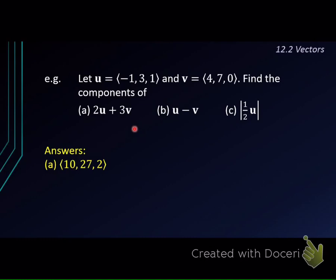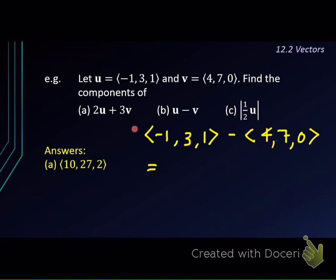For u minus v: we have (−1, 3, 1) minus (4, 7, 0). We subtract the respective components: negative 1 minus 4 gives negative 5; 3 minus 7 gives negative 4; and 1 minus 0 gives 1. So the answer for part b is (−5, −4, 1).